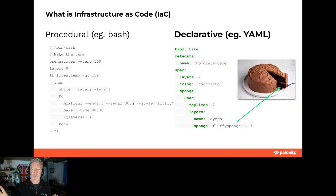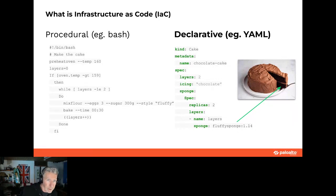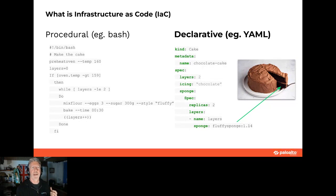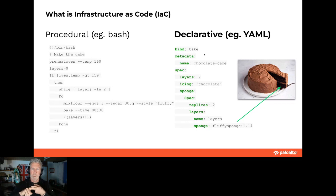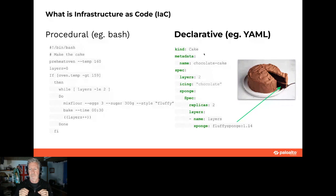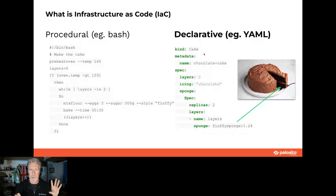Now with a declarative approach — and there's a question about whether Terraform is in between procedural and declarative; I say it is very much declarative. What I'm doing in the declarative style is saying I want a chocolate cake with two layers. I'm going to use the fluffy sponge image for my sponge because I've scanned it, it's all good, and Kubernetes is going to make that happen and keep it that way.